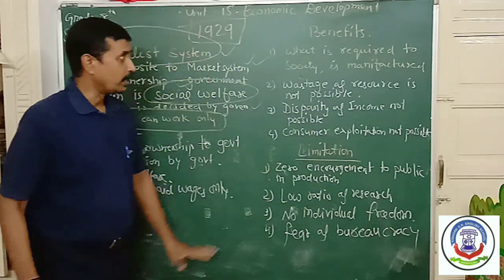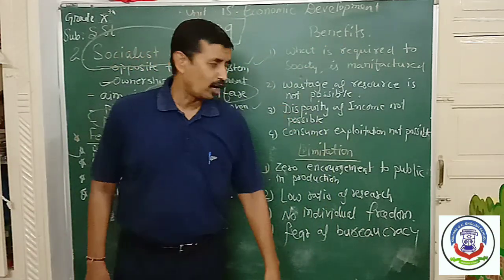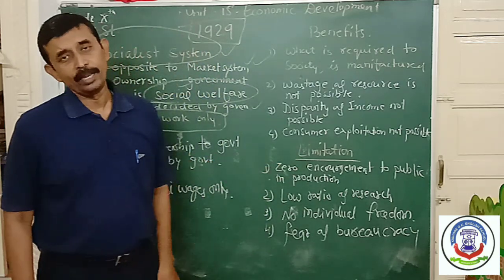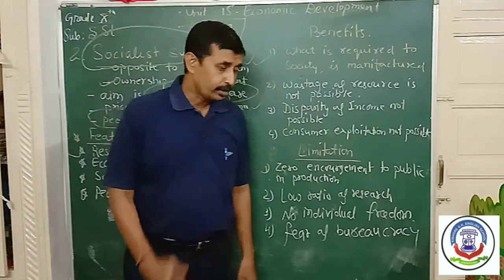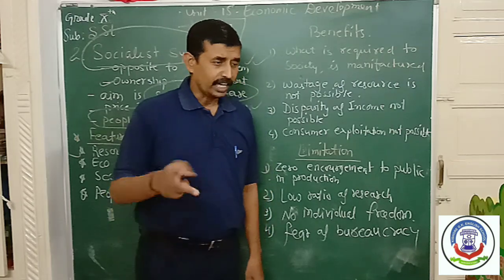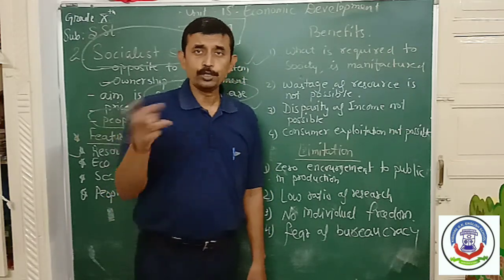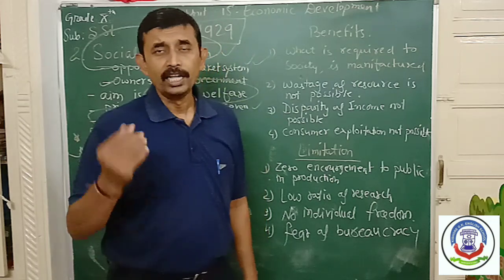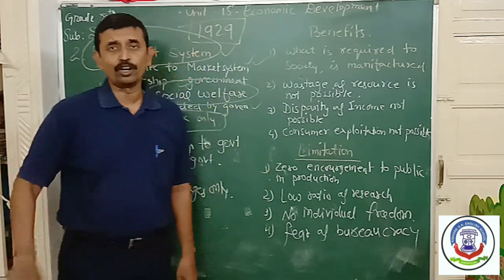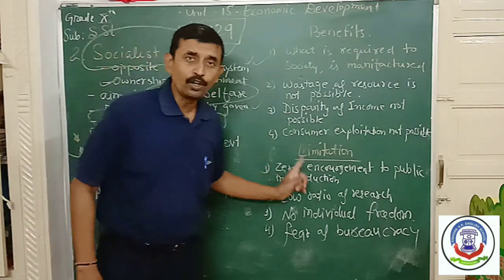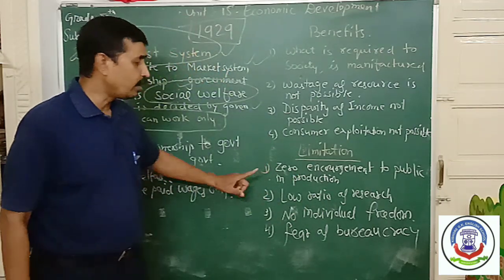After seeing the benefits of socialistic economy, let us focus on the limitations. Today, countries like China and Russia that adopted the socialistic system have left this type of economy — just because of its limitations. The first limitation is zero encouragement to the public in production.